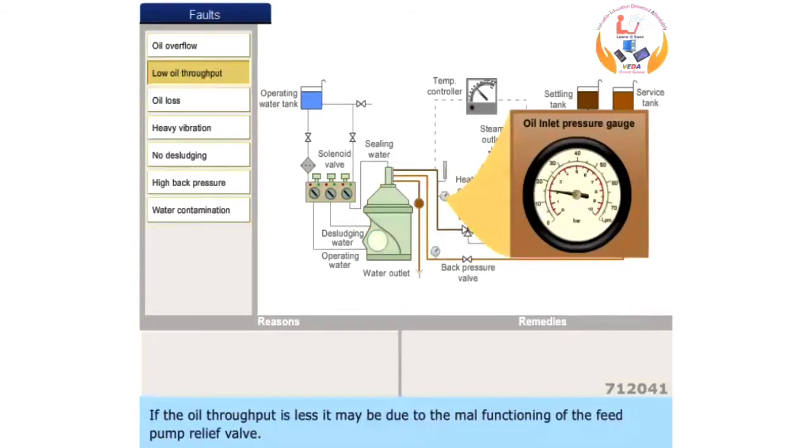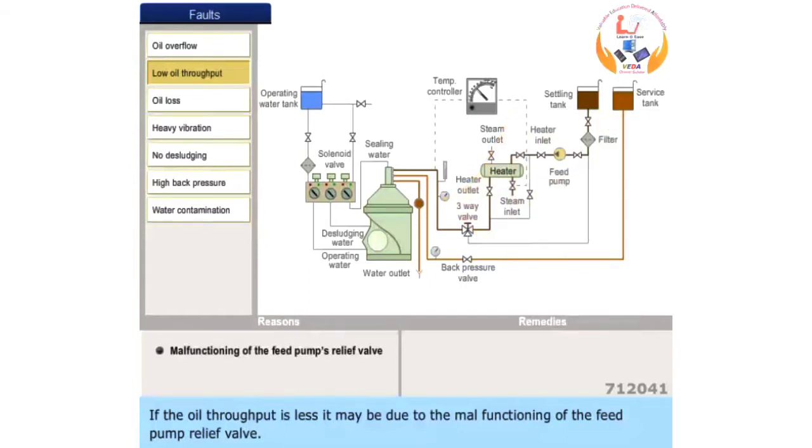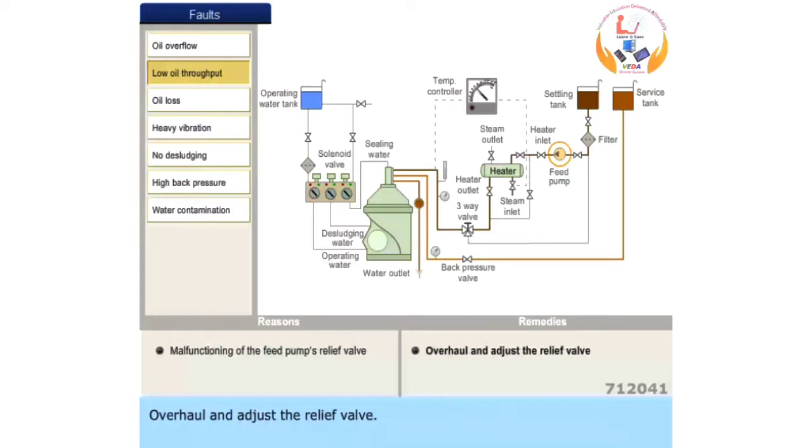If the oil throughput is less, it may be due to the malfunctioning of the feed pump's relief valve. Overhaul and adjust the relief valve.